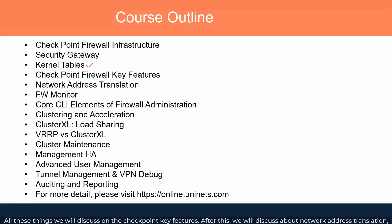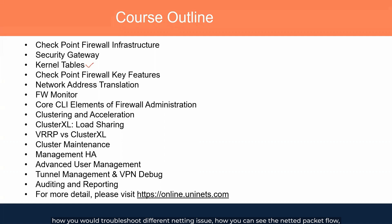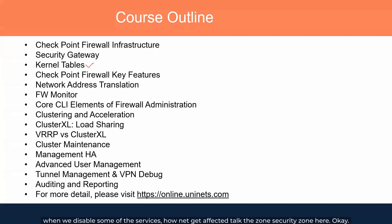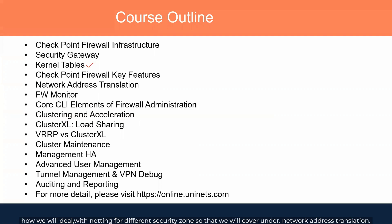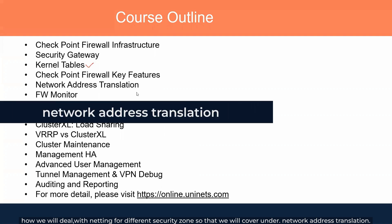After that, we will discuss network address translation — NAT. We already covered NAT in CCSA, but here we will go into more depth: how exactly NAT works, how to troubleshoot different NAT issues, how to view the NAT and NATted packet flow, how to monitor it, what services are available for NAT, and how NAT is affected when some services are disabled. We will also talk about security zones and how to deal with NAT for different security zones.